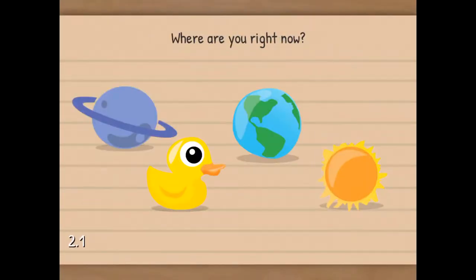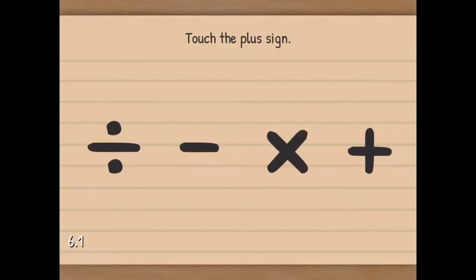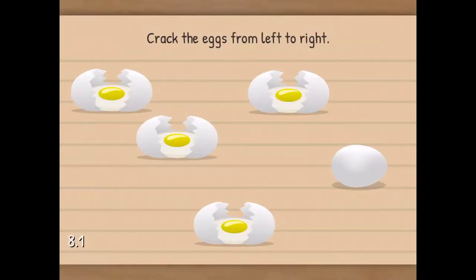Now, press the red button to continue. Where are you right now? Earth. Now touch the sun. Now touch the remaining planet. Touch the plus sign. Left to right. Red button, then blue, then green.